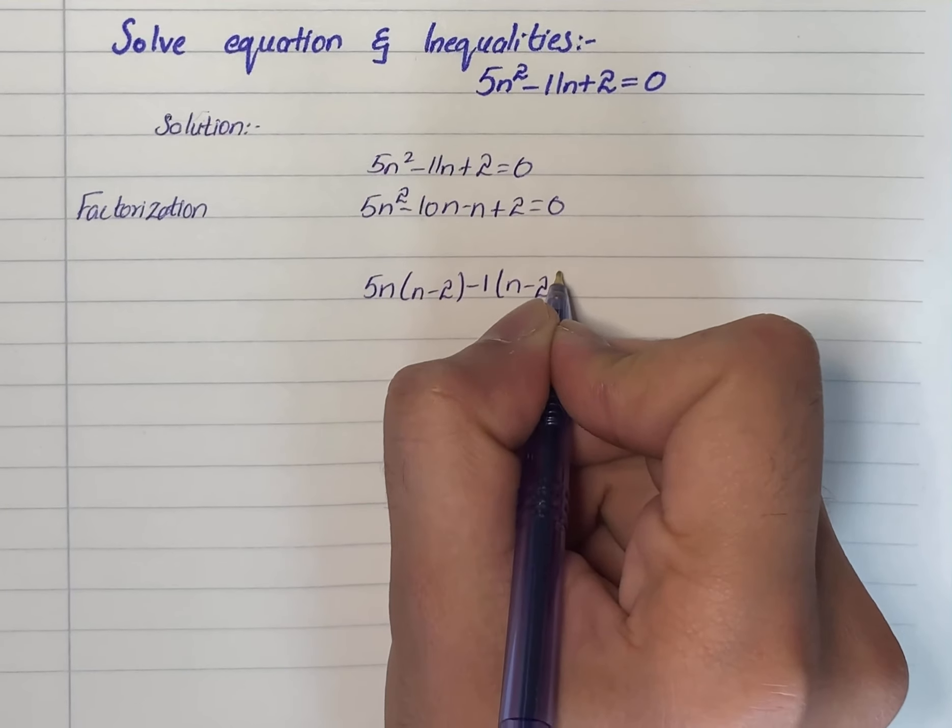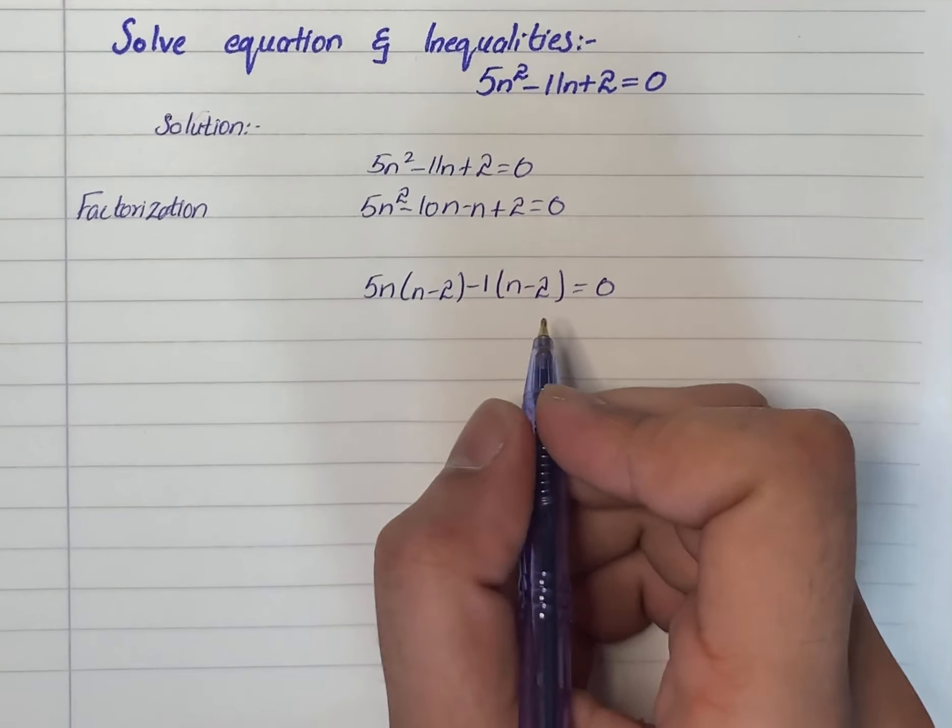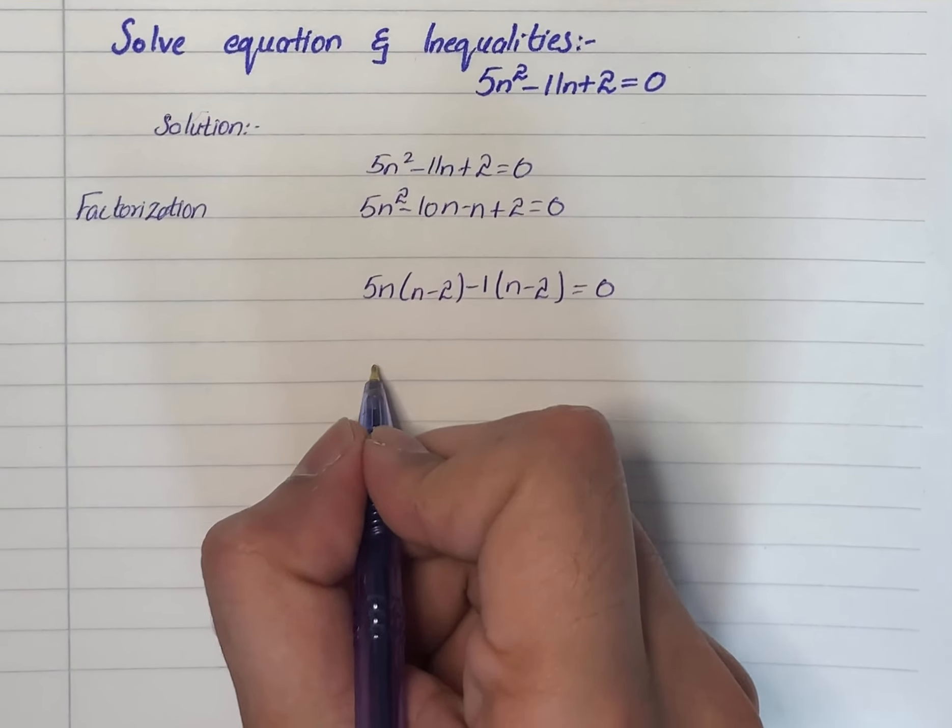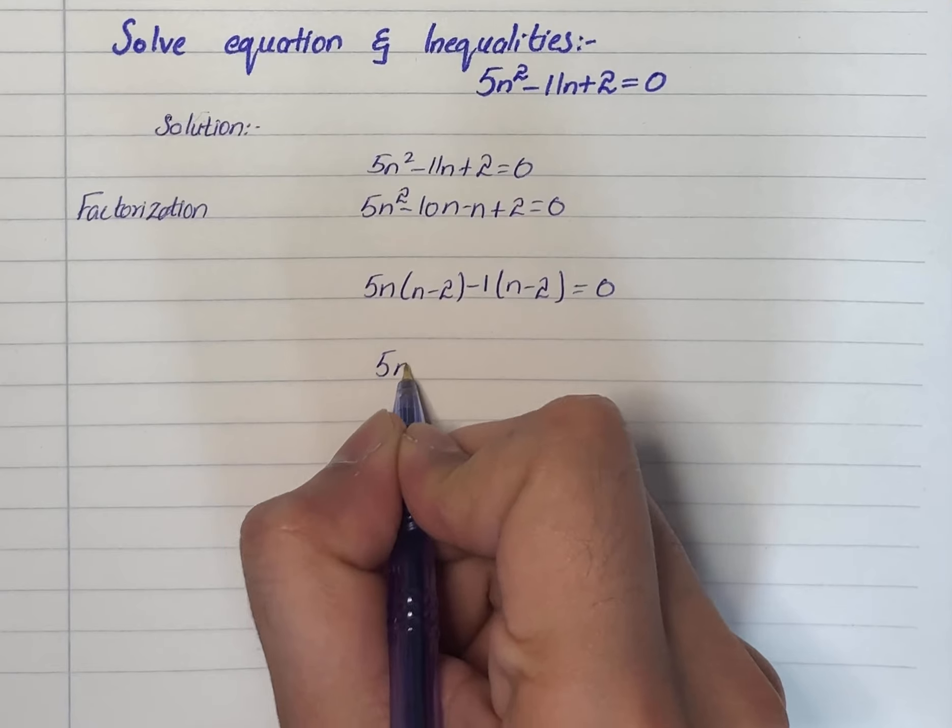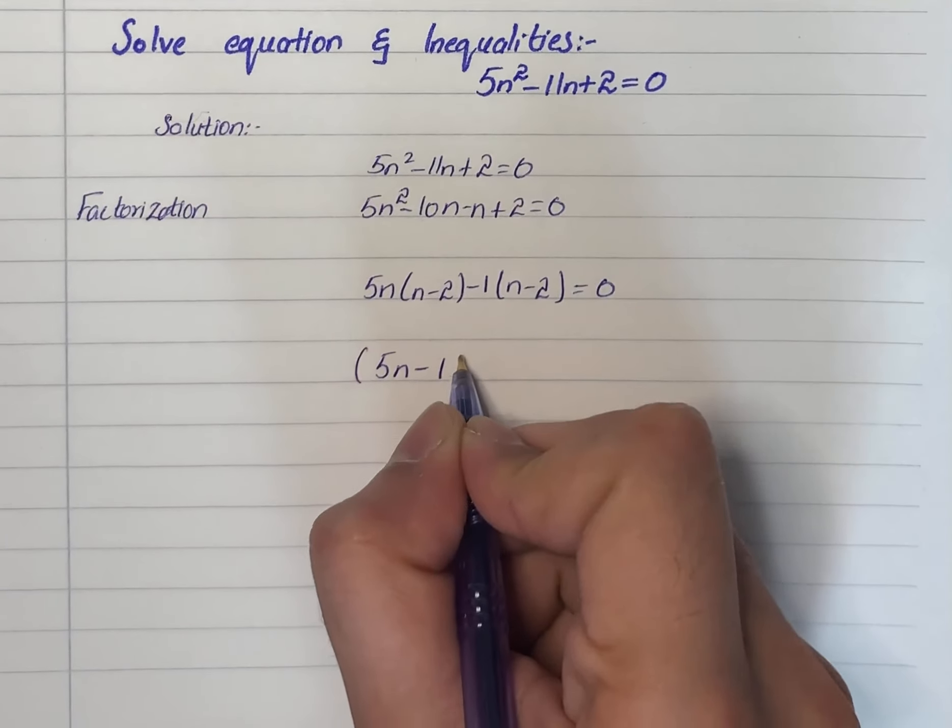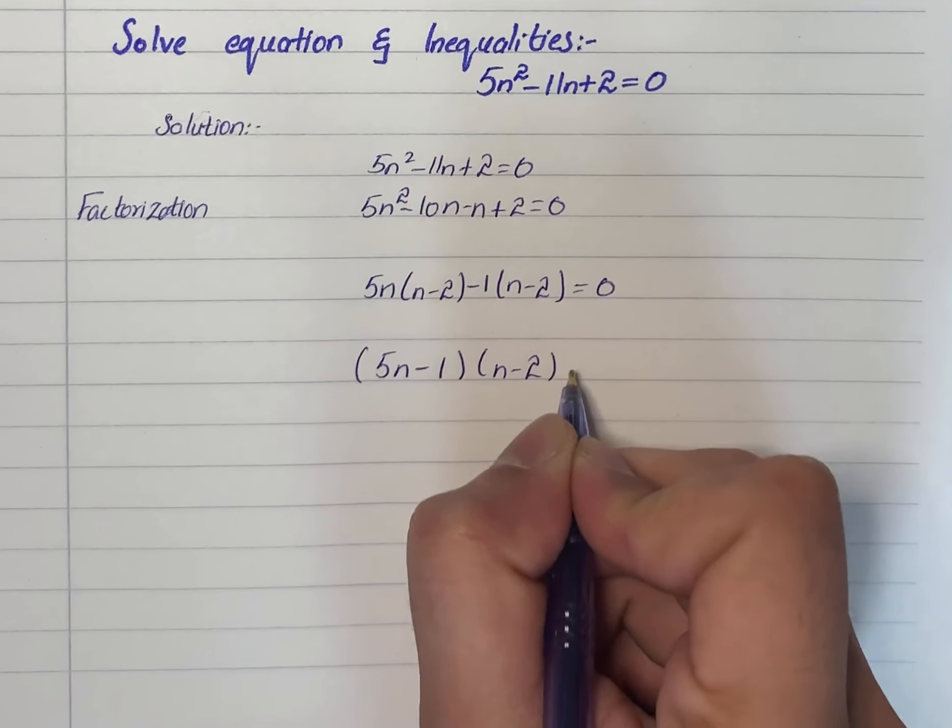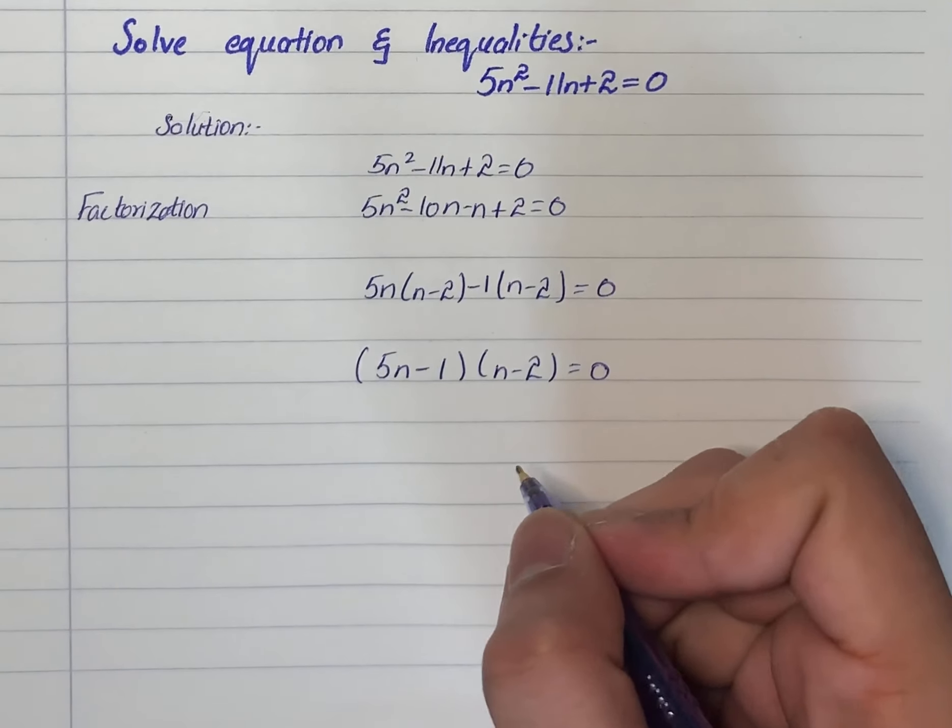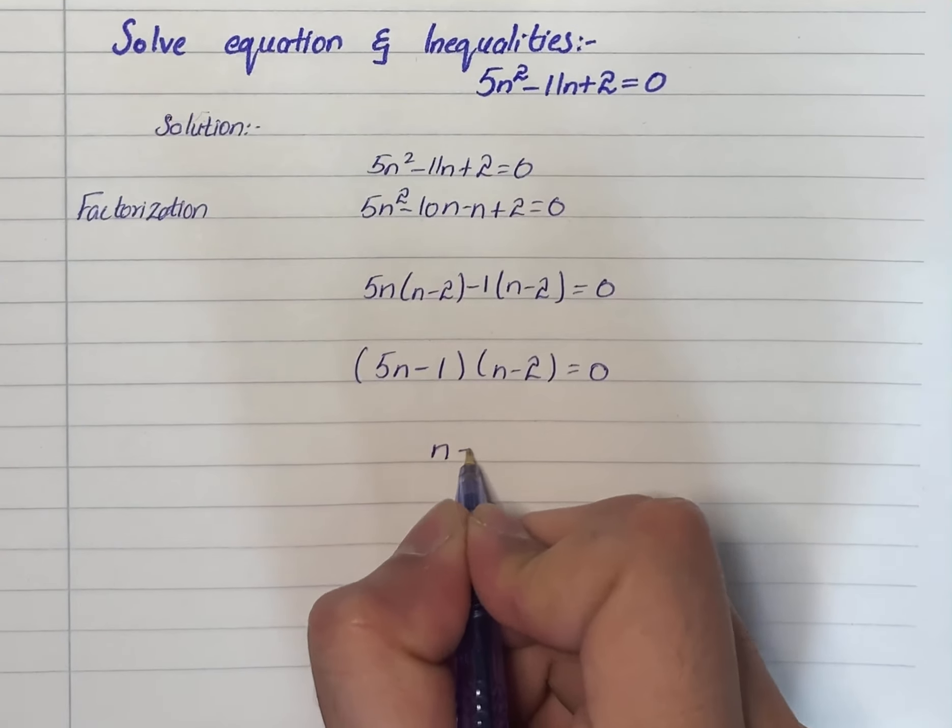Now it will become 5n - 1 into n - 2 = 0. Now here as we will change sides, so it will become n equals to 1/5.